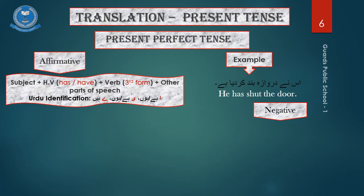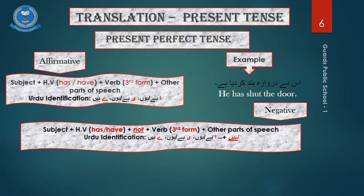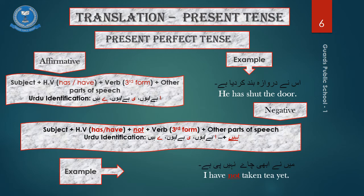For the sentence identification in the negative form, we have the same identifiers as mentioned for the affirmative form, but here we will have the Urdu word of negation nahi. For example, maine abhi chai nahi pihi hai. I have not taken tea yet.